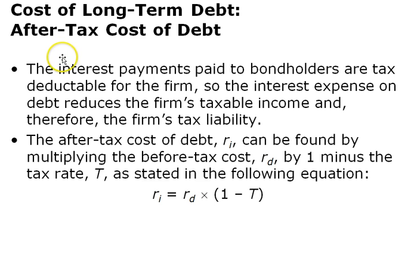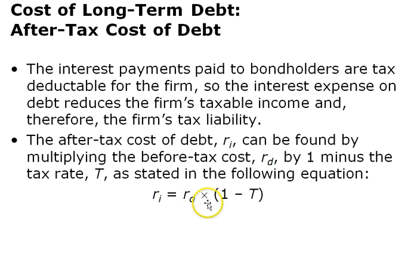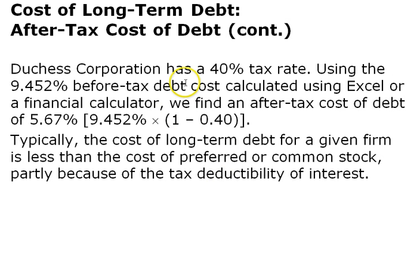Now let's move to the after-tax cost of debt. For businesses, the cost of debt is tax deductible. The actual real cost of debt is the after-tax cost, as far as cost of capital is concerned. Interest payments to bondholders are tax deductible, reducing the firm's taxable income and tax liability. To calculate it, we take the cost of debt and multiply by 1 minus the tax rate. For Dutchess Corporation with a 40% tax rate and a before-tax cost of 9.45%, the after-tax cost of debt is 5.67%.